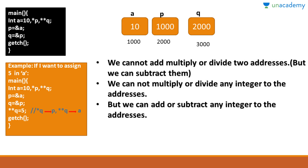In this example, a = 10, int asterisk p, and int double asterisk q. We store the address of a in p, and the address of p in q. Double asterisk means indicating the level of indirection. Asterisk p is level 1, so it can hold the address of a level 0 variable. Double asterisk q is level 2, so it can hold the address of a level 1 pointer. So q stores the address of p, and p stores the address of a.